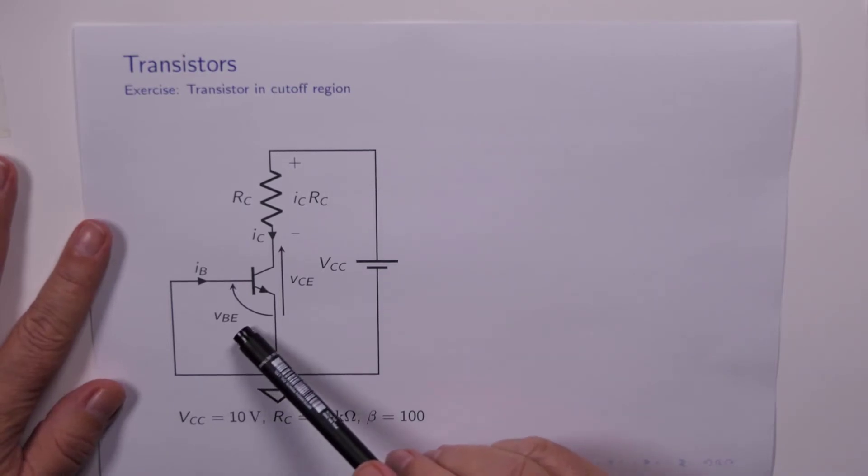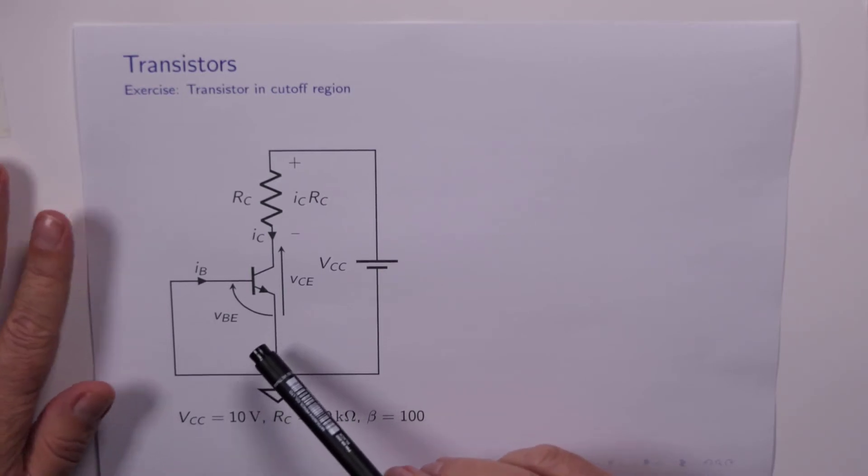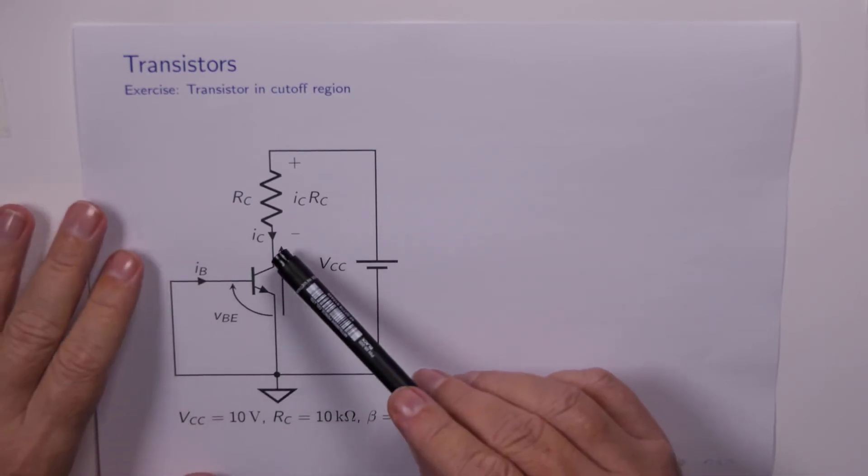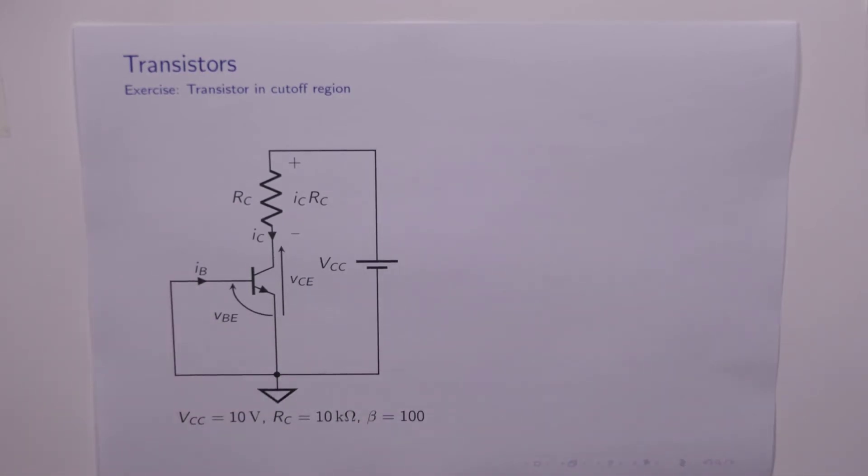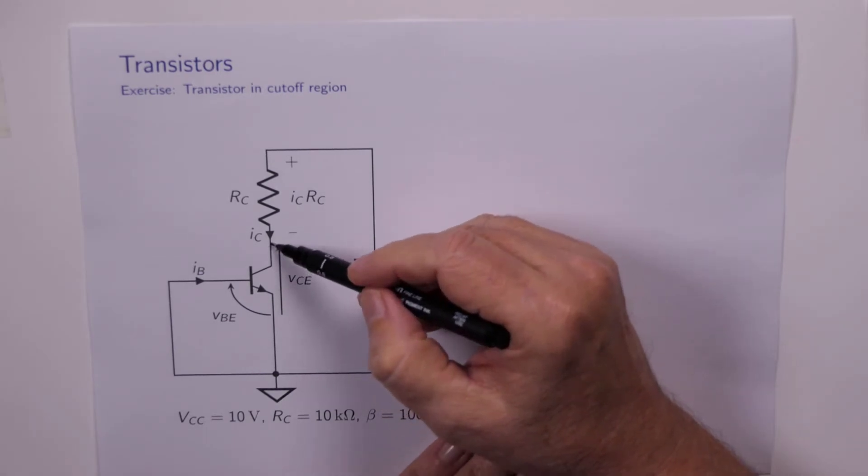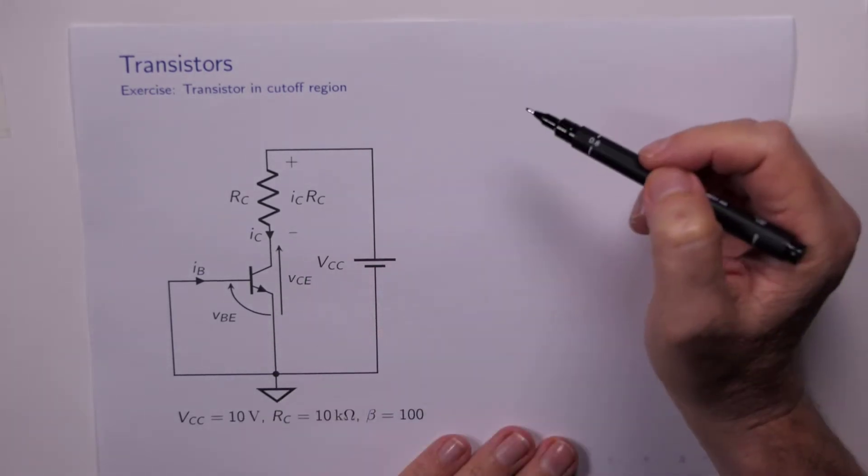therefore VB minus VE is 0 minus 0 equals 0. When VBE equals 0 is clearly less than 0.5, and we know that when it's less than 0.5 the base current is 0, which means the collector is 0,